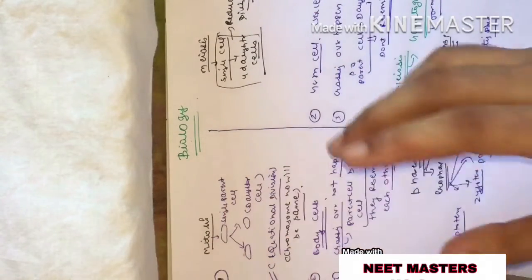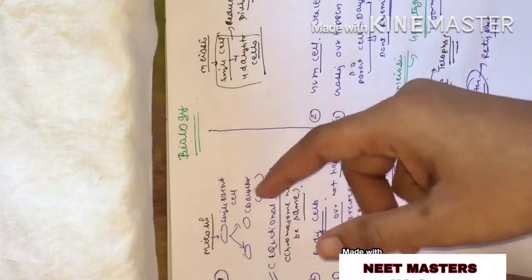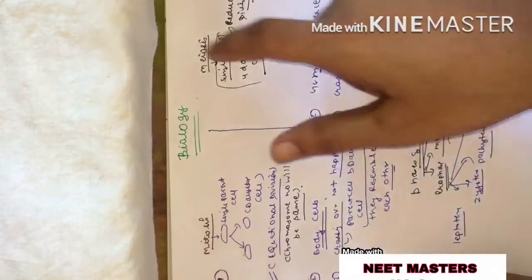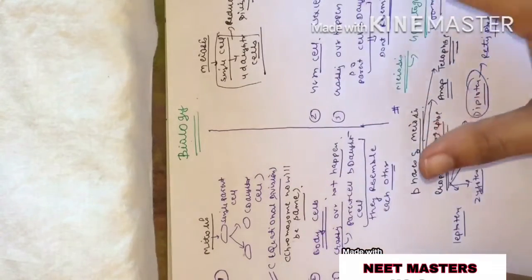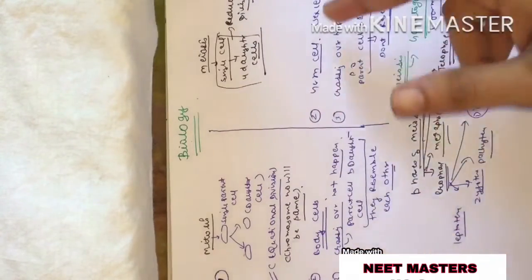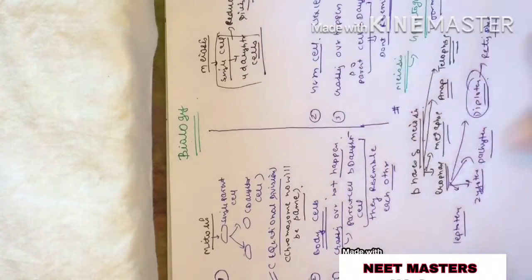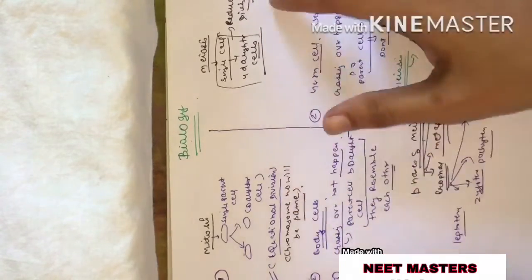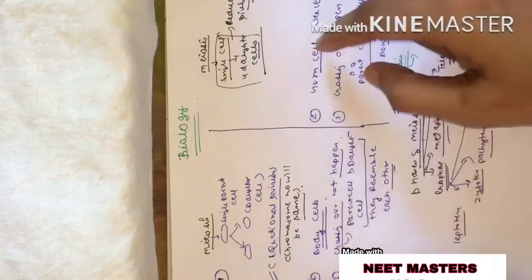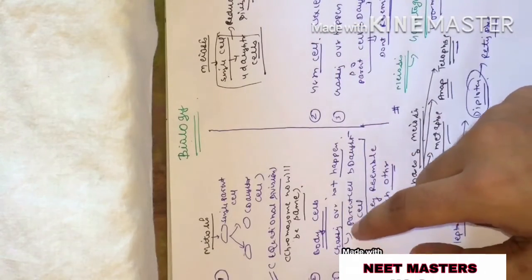To quickly review: mitosis is the process in which a single cell divides into two cells without any reduction division. Meiosis is a reduction division that occurs in two steps, producing four daughter cells. Mitosis is equational, meiosis is reduction. Mitosis happens in body cells, meiosis happens in germ cells.